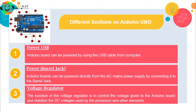The work of the voltage regulator is to reduce the DC supply voltage to the operating voltage of the Arduino board — 5 volts if the board operates at 5 volts, or 3.3 volts if the board operates at 3.3 volts.